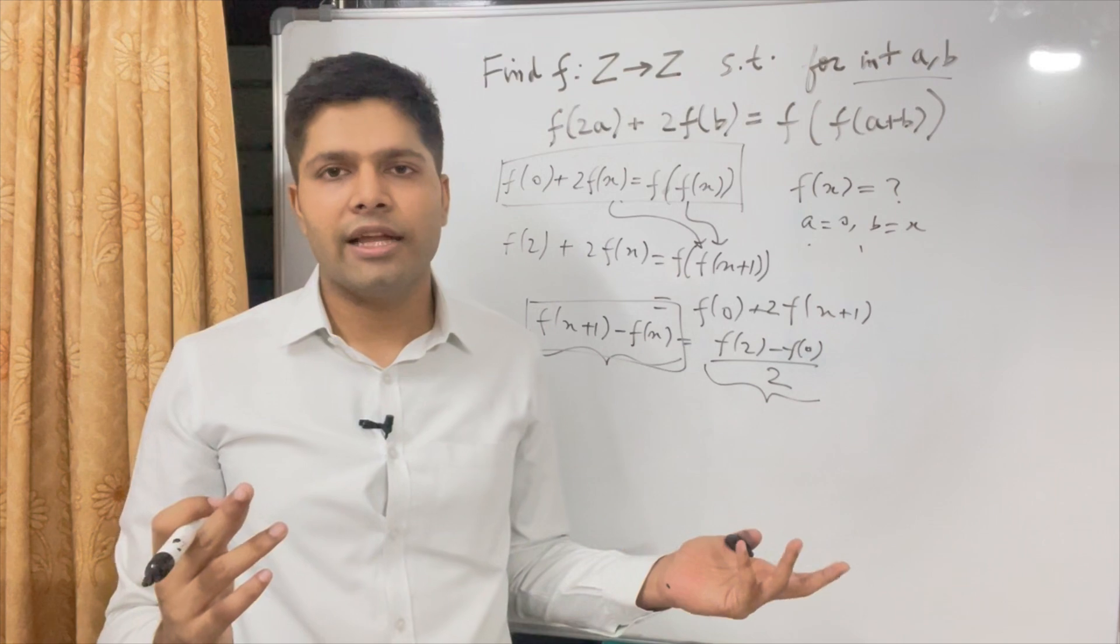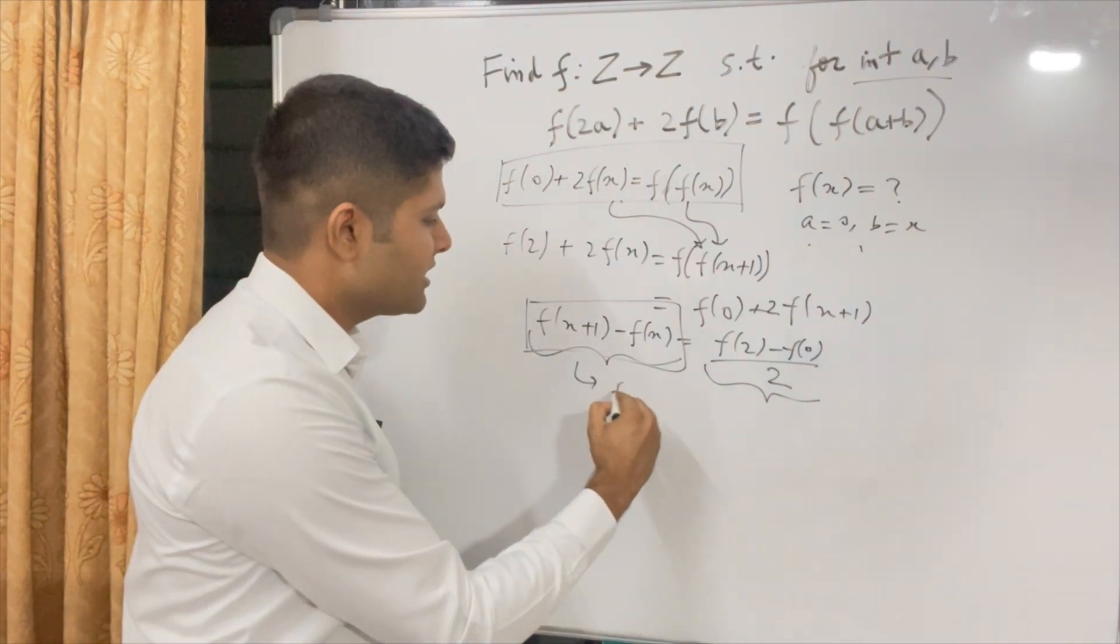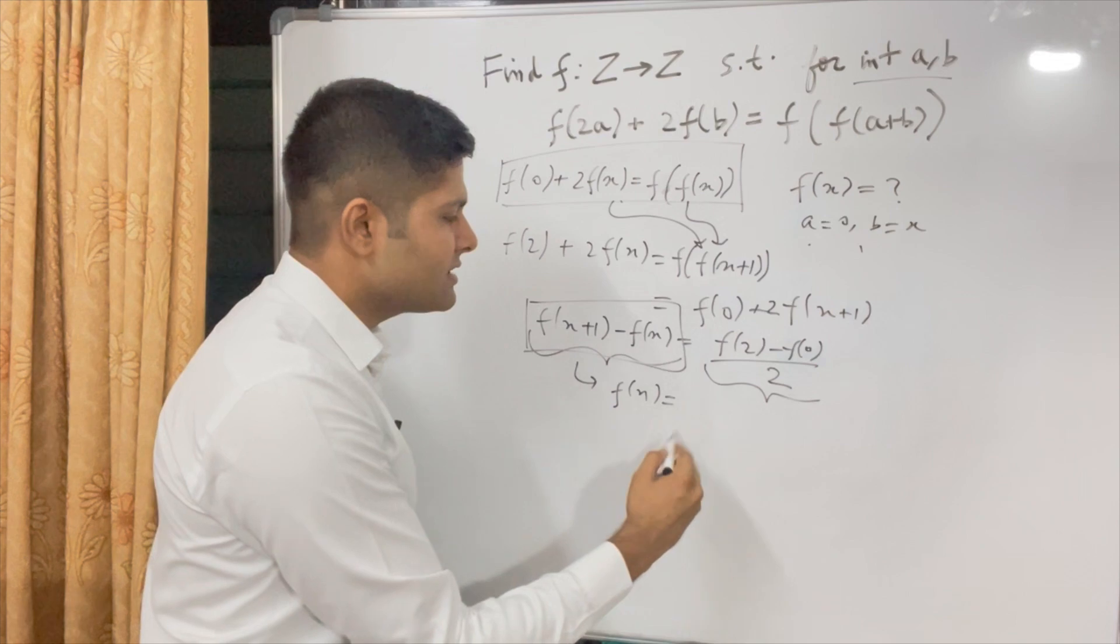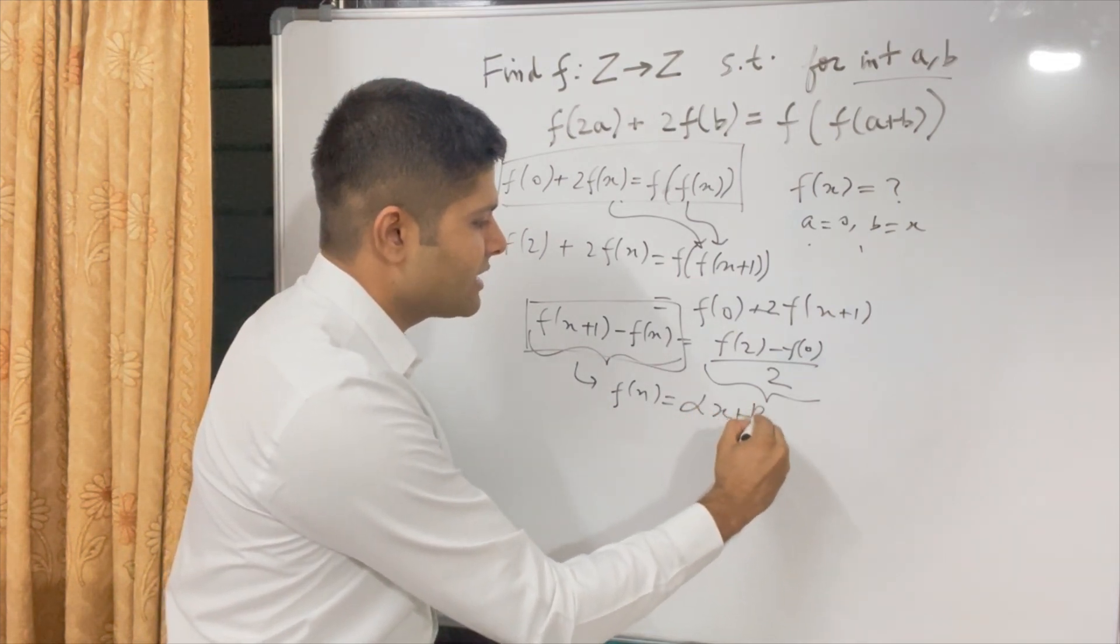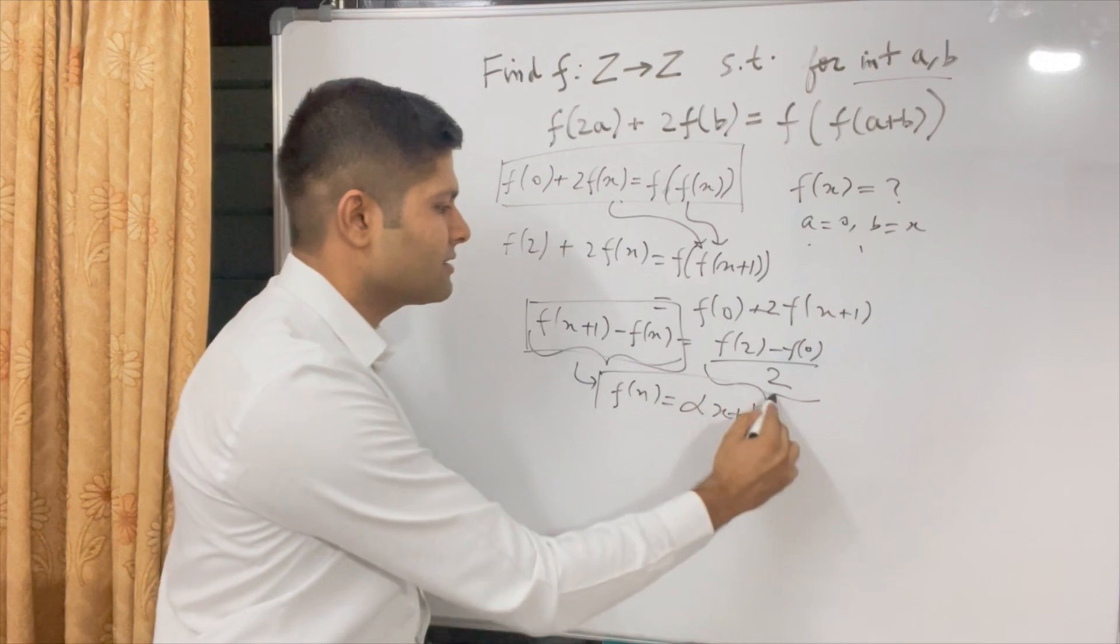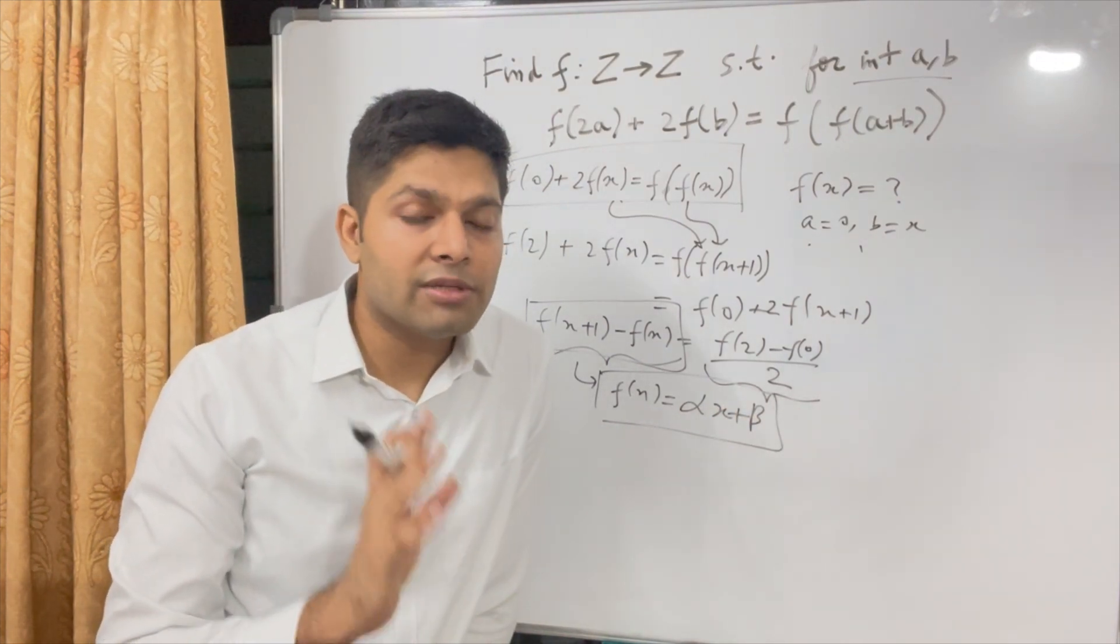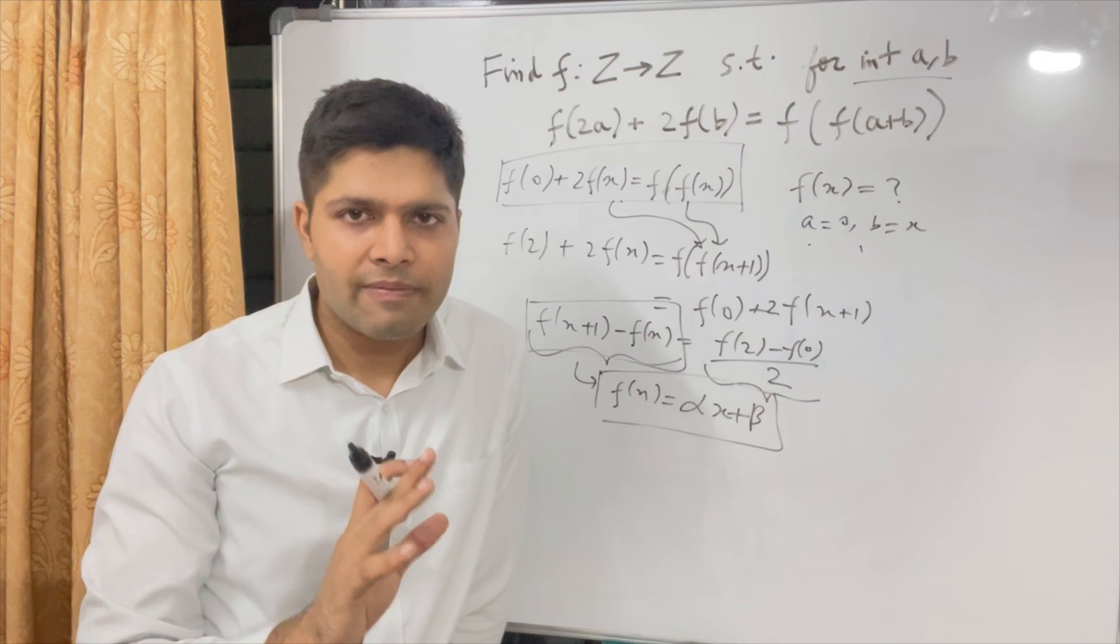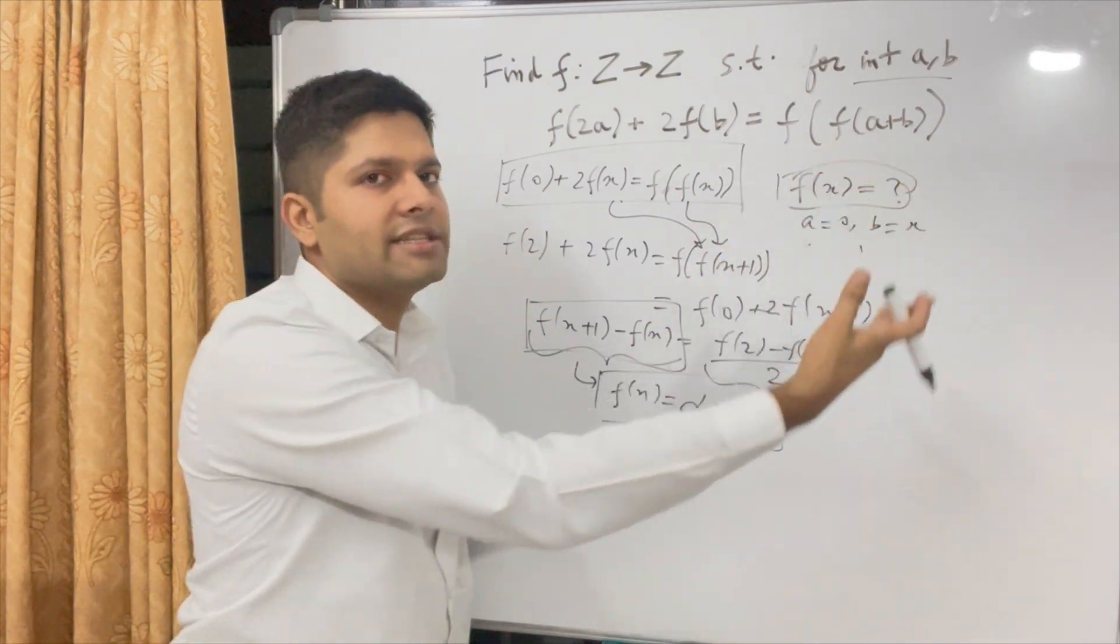What is this? This is a linear function. This is like an arithmetic progression, like a linear function. So from this value, we can conclude that f(x) = αx + β. It is of this format. This is what we conclude. So we didn't do anything fancy here. It might be a bit confusing, but please try to understand this is nothing fancy. We just are trying to find f(x) in some fashion for all integers x.